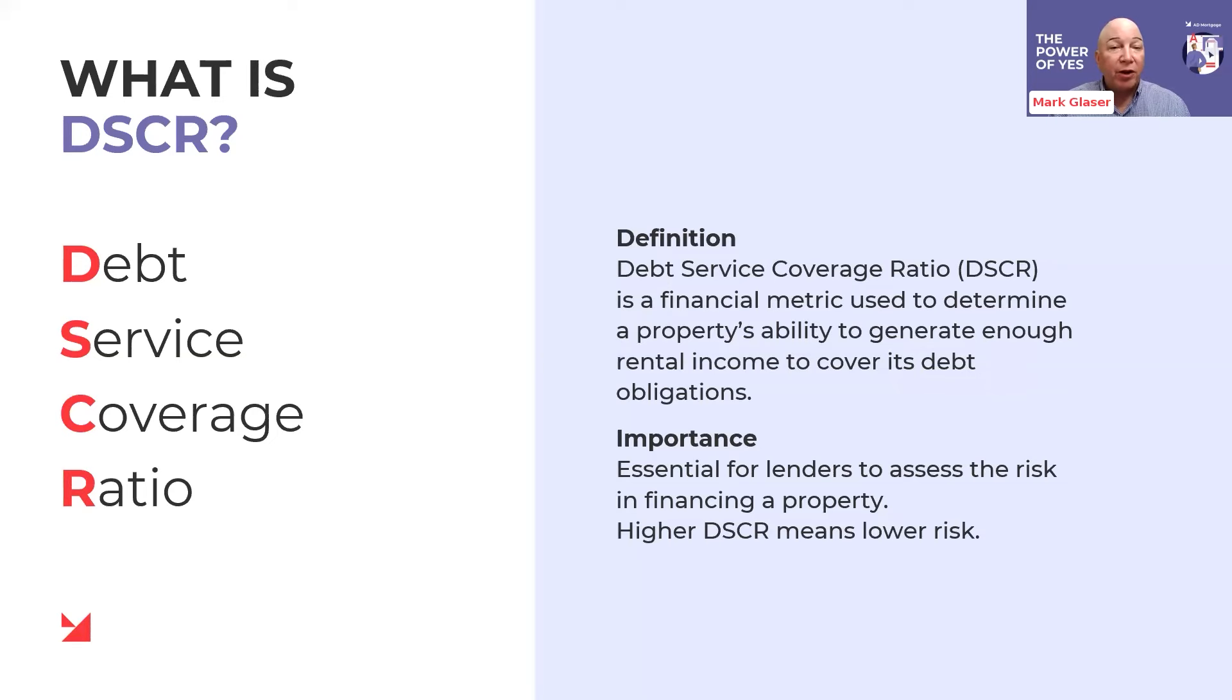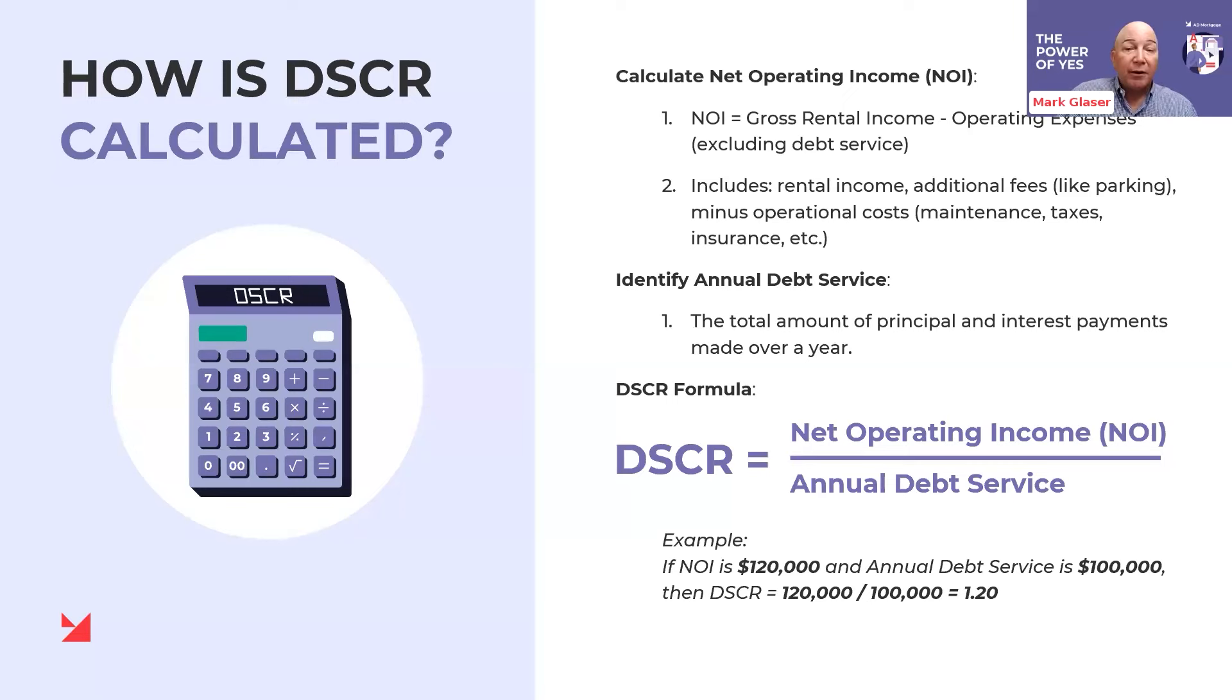Good afternoon, everybody. And welcome to AD Mortgage. This is DSCR Thursday. We're going to talk about debt service coverage ratio loans. So a debt service coverage ratio loan is predicated on the rent of the property versus a borrower's income. So when one would do such a loan, there's no income, no employment, no employer. We are just worried about whether or not the property is an investment property and whether or not it is rentable.